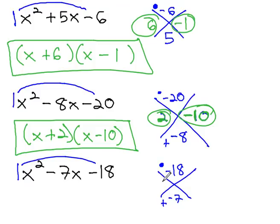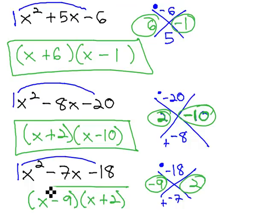To multiply to 18, we could use 6 and 3, but that won't give us 7, or we could use 9 and 2, which gives us 7 if the 9 is negative. Negative 9 times 2 is negative 18, and negative 9 plus 2 is negative 7. We'll use those numbers to get our factors, x minus 9 and x plus 2, and we have our solution.